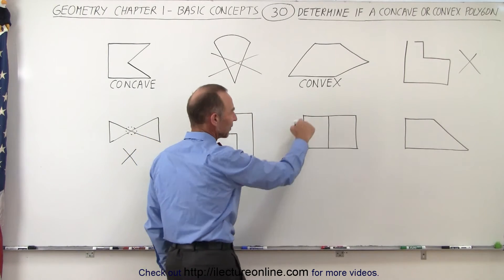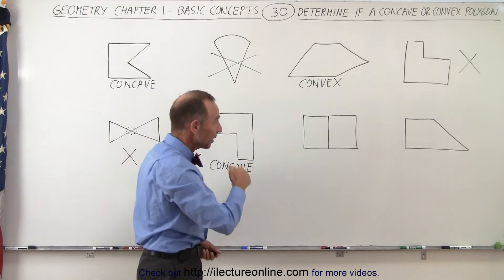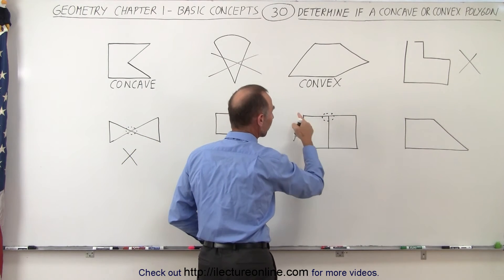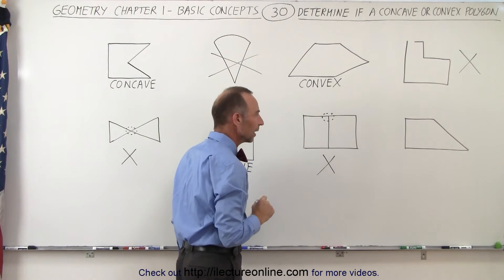Over here we have a rectangle that normally would be a polygon, but because there's a line in the middle, we have more than one connection of a line segment to another line segment, so therefore this is not a polygon.